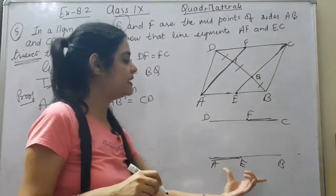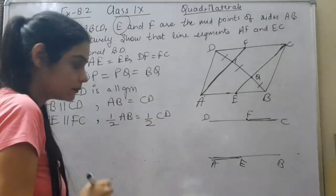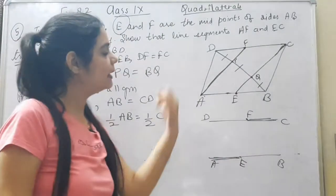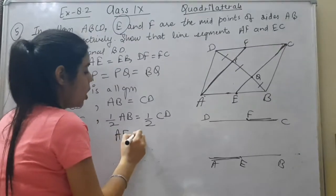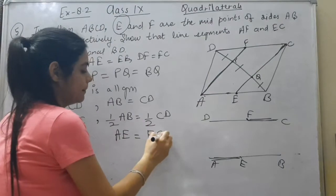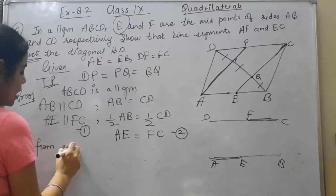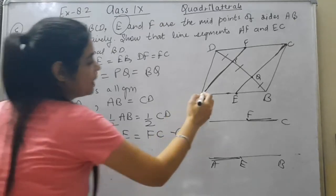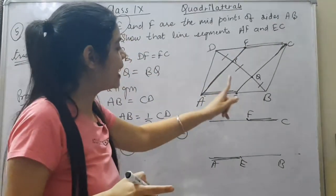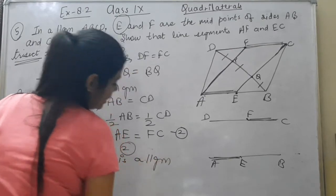Now AB = CD, because opposite sides of a parallelogram are equal. Since E is the midpoint of AB and F is the midpoint of CD, AE = half of AB and FC = half of CD. Therefore AE = FC — this is equation 2. From equations 1 and 2, AE is parallel to FC and AE = FC. So AECF is a parallelogram.